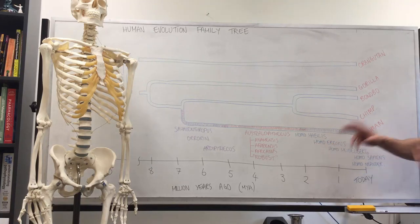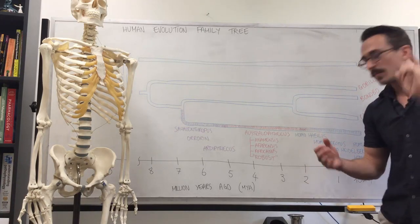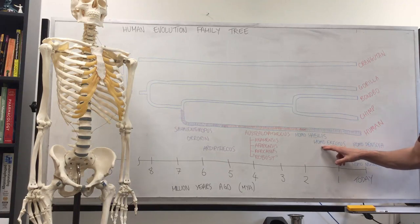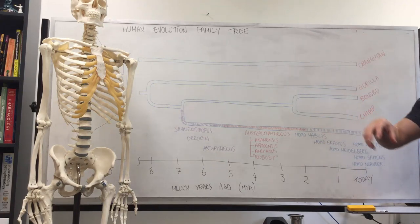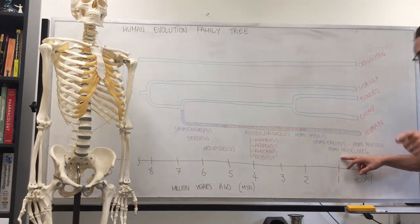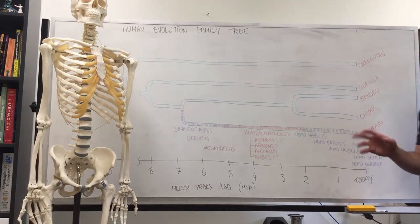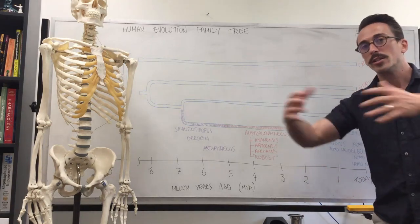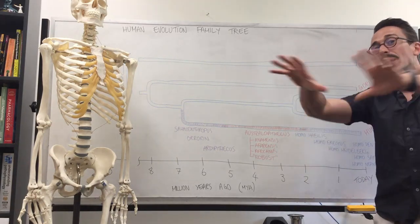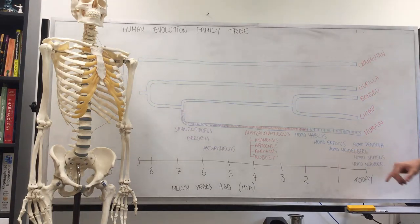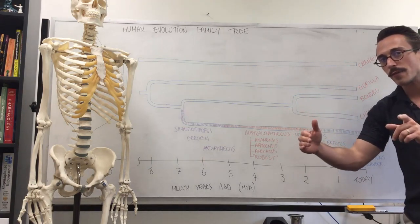Homo erectus spread out of Africa through to Eurasia, and what we have is that the Homo erectus that lived in Africa gave rise to Homo heidelbergensis. And Homo heidelbergensis, at around about 1.7 odd million years ago, also spread out of Africa into Eurasia. In the areas outside of Africa, Homo heidelbergensis seemed to give rise to Homo neanderthalensis, or Neanderthals, and the Denisovans. So Neanderthals and the Denisovans came from Homo heidelbergensis outside of Africa.